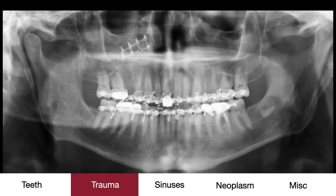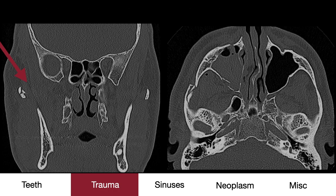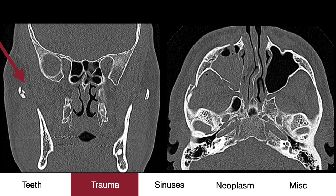We see extensive dental hardware over both the maxillary and mandibular teeth, and also this unclear radiopaque structure overlying the right maxillary sinus. When looking at the bones, we see an asymmetric right zygomatic arch relative to the left. The left side is what an arch should look like, but instead the right side was fractured.